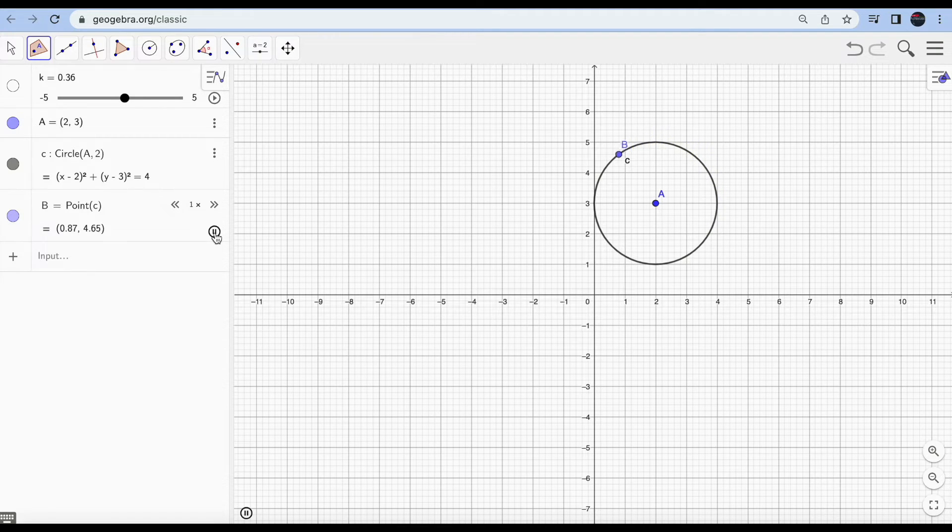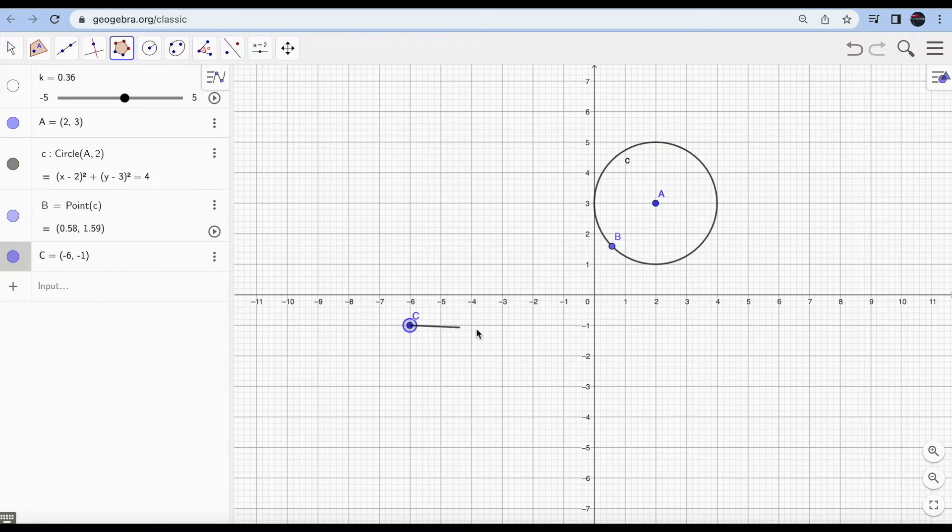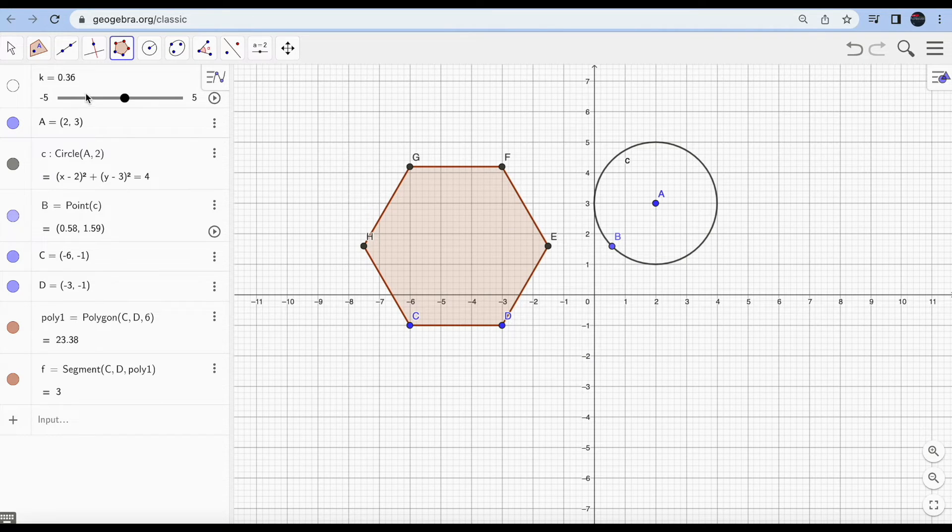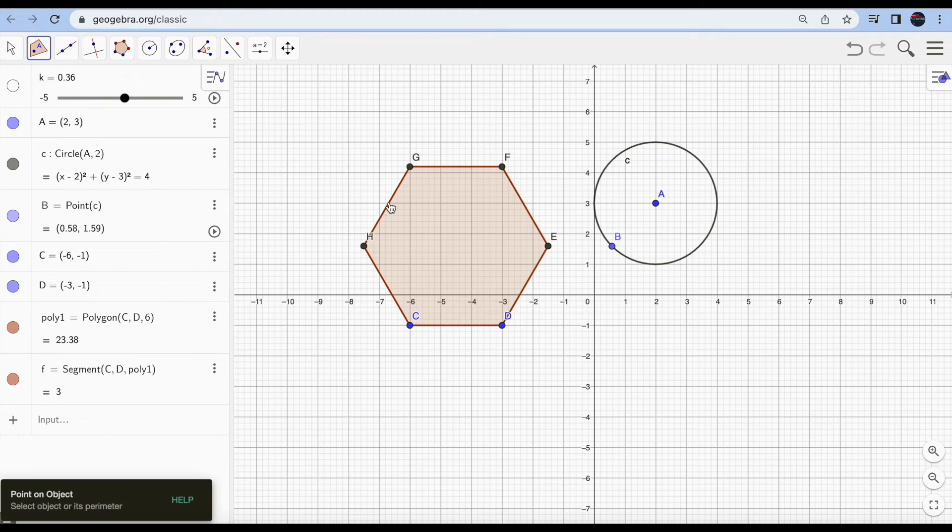It's going to follow the path of circle A. Instead of a circle, if you would have taken, let's say, a regular polygon.